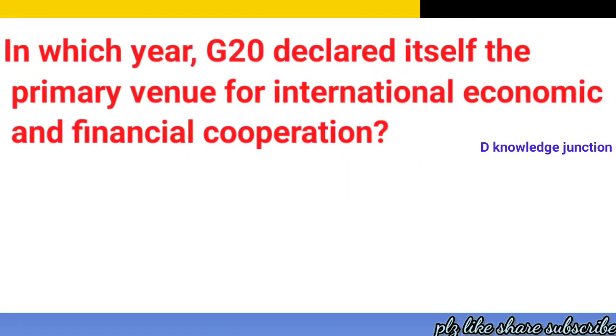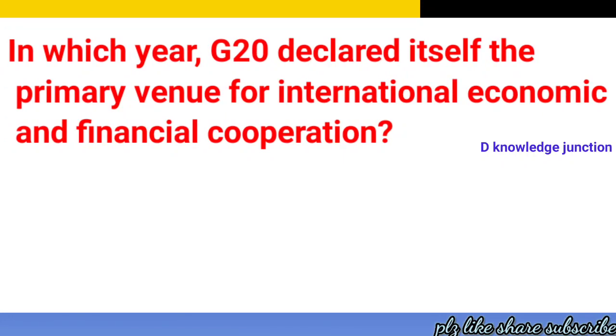In which year did the G20 declare itself the primary venue for international economic and financial cooperation? The correct answer is 2009.